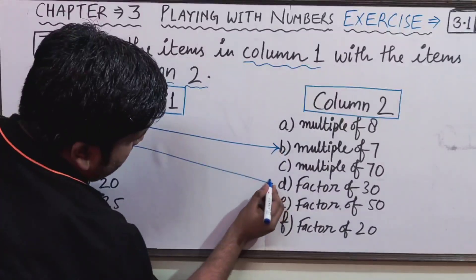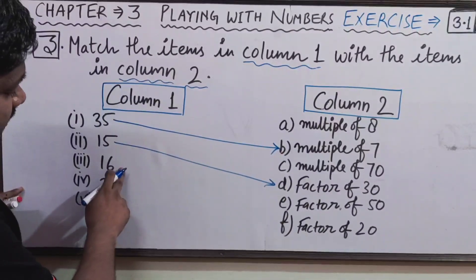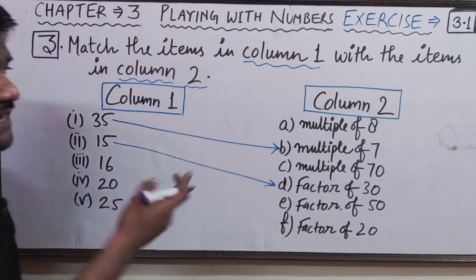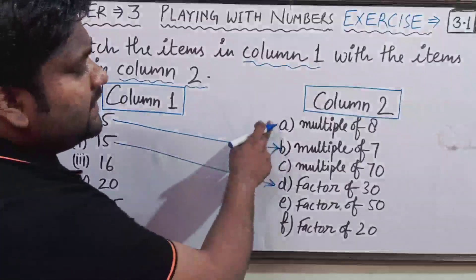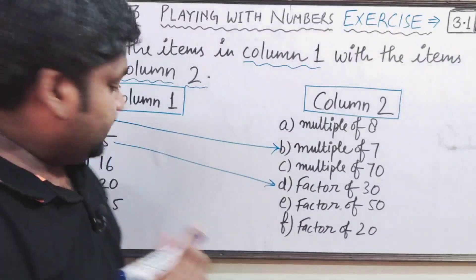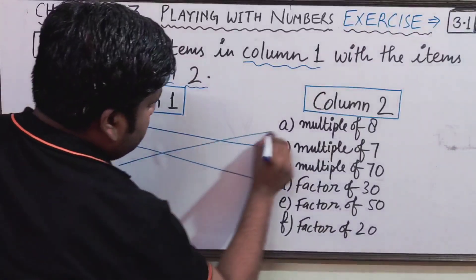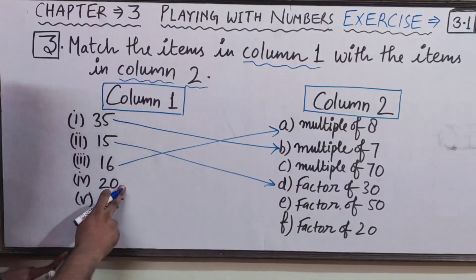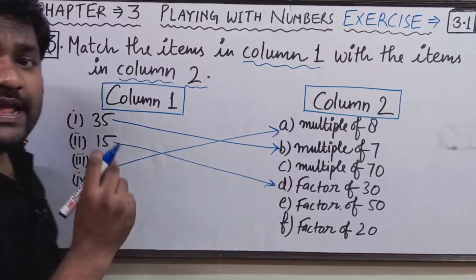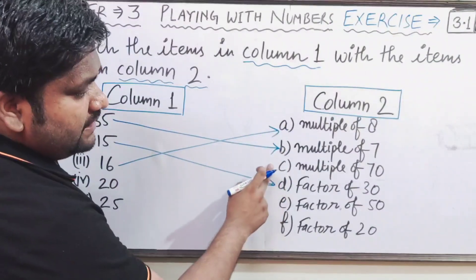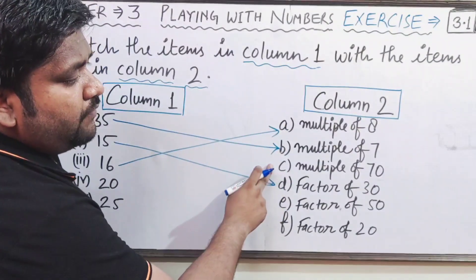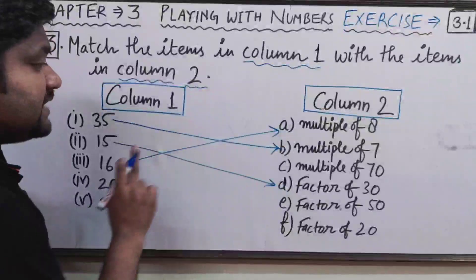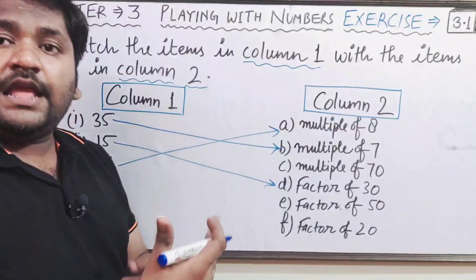Now let us check 16 — is it a multiple of 8? Yes, 8 × 2 = 16, so 16 is a multiple of 8 — match it. Now check 20 — is it a multiple of 70? No, 20 is not a multiple of 70.